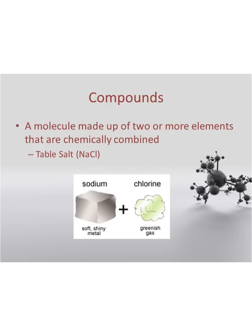A compound is specifically a molecule that has two or more different elements that are chemically combined. Table salt is an example — we have sodium attached to a chlorine, a metal combined with a gas, and it creates a white crystal. That's evidence that we've gone through a chemical reaction and created a completely new substance, so this would be considered a compound.